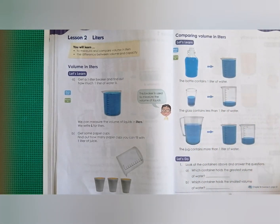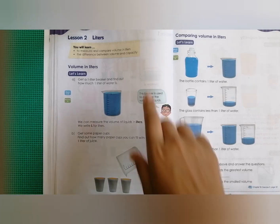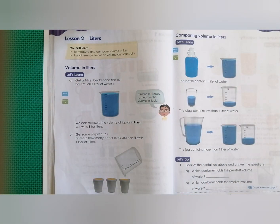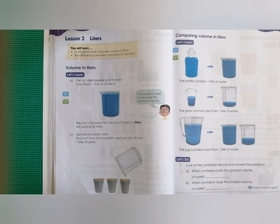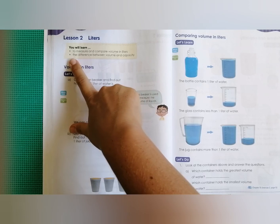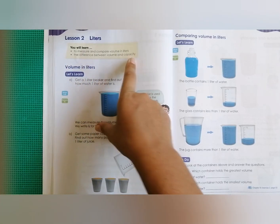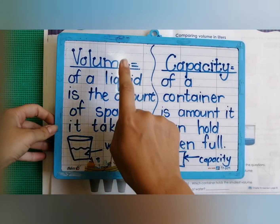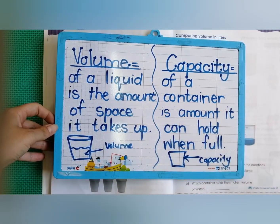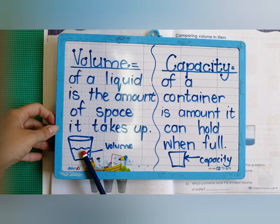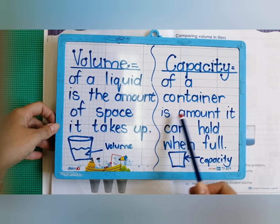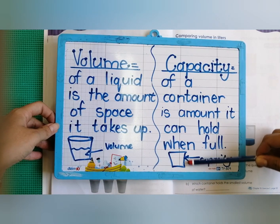In this lesson we will learn to measure and compare volume in liters. Remember, volume is the amount of space that a liquid takes up. We will also find out the difference between volume and capacity. The volume of a liquid is the amount of space it takes up, while the capacity of a container is the amount it can hold when it is full — the maximum capacity.